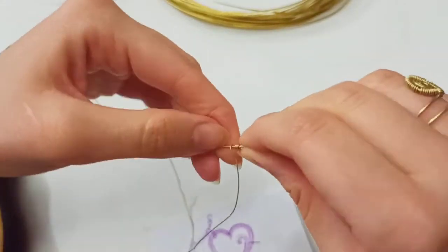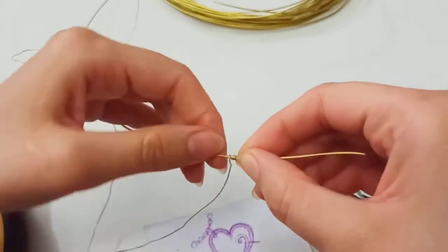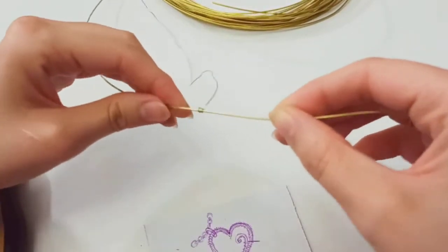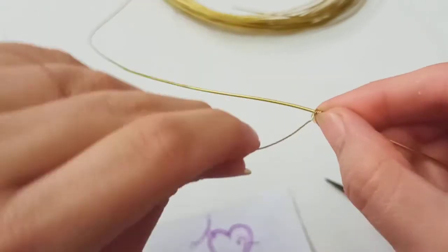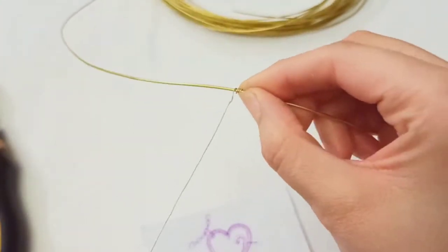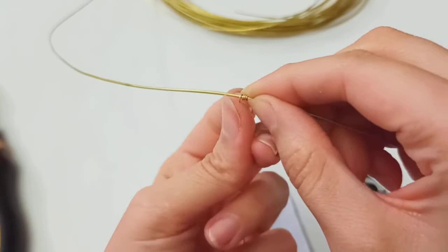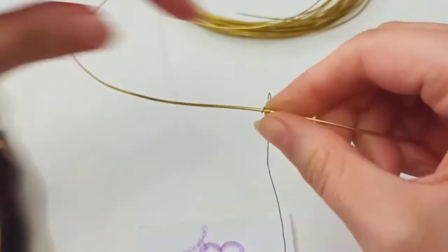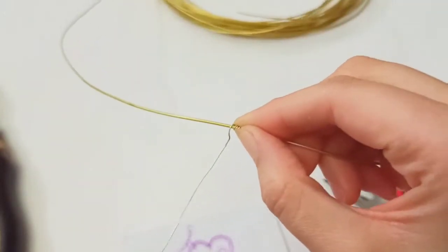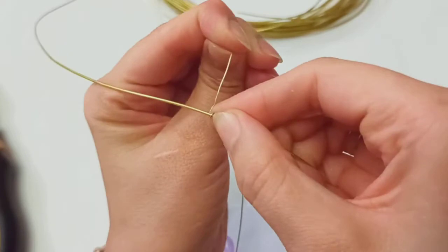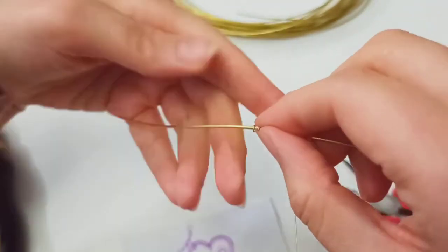You could use your tools like round nose pliers or chain nose pliers to do that better and easier. So we start making this coiling part, and you know that for doing this you need to use your thumbs and your nails in a proper way.